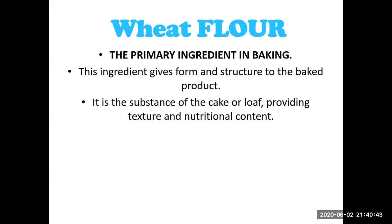The first ingredient in baking is wheat flour. Wheat flour is the primary ingredient in baking — it gives form and structure to the baked product. It is also a structure-binding ingredient, because without flour you cannot prepare any baking product. It is the main substance of a cake or loaf of bread, providing texture and nutritional content.